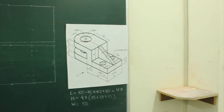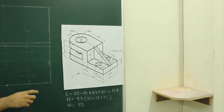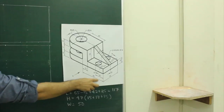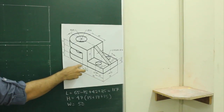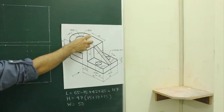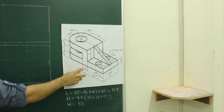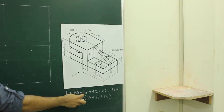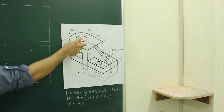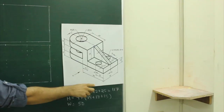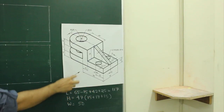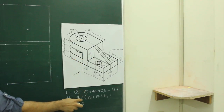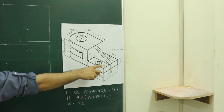In this problem, the length is 117. The observer is seeing from this side. This is 65, and they are given 42. If you notice, 15 is overlapping, so we need to do 65 minus 15, plus 42, plus 25, so length will be 117. Height would be 32 plus 15, so that would be 47, and width is 50.